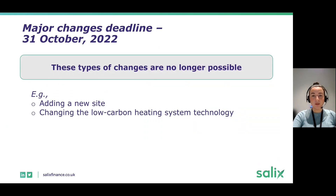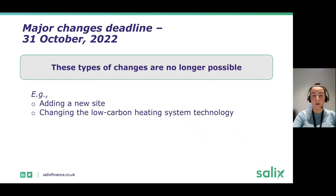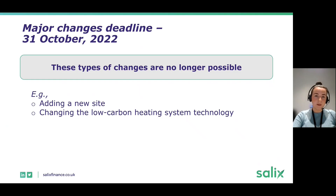The major changes deadline has already passed — it passed on the 31st of September 2022. Changes such as adding a new site, changing sites, or changing the low carbon heating system technology are no longer possible for single year projects due to deliverability concerns by March 2023. For multi-year projects completing in March 2024 or March 2025, major changes are still being accepted.